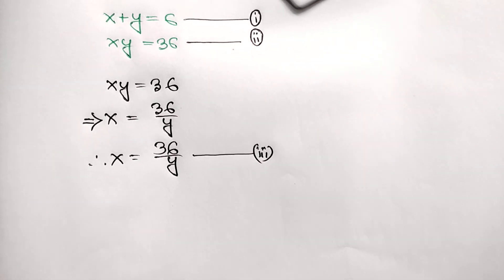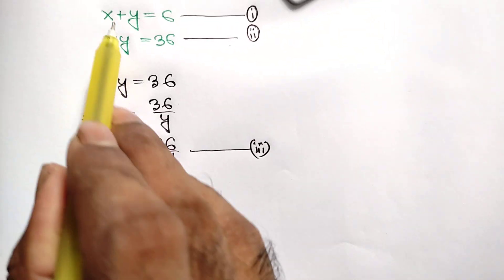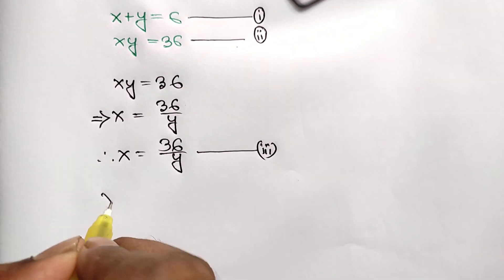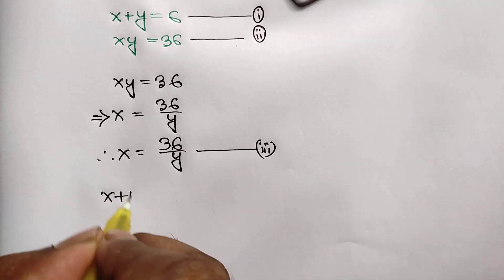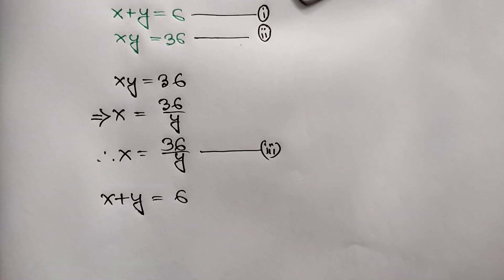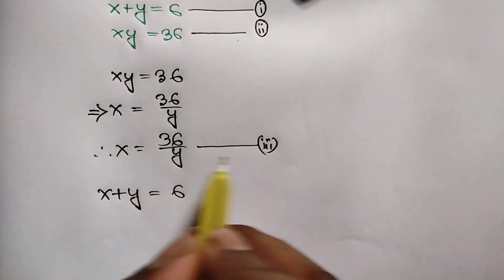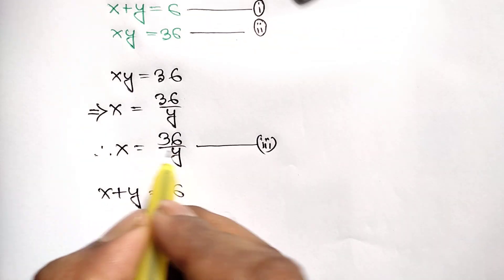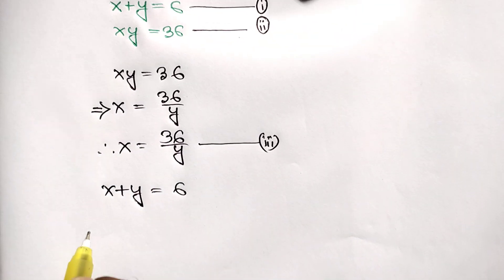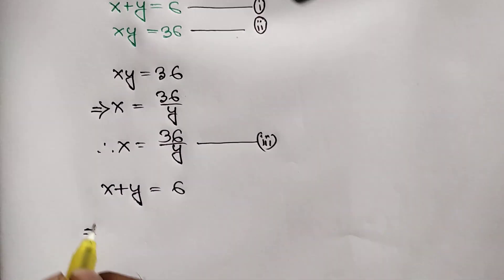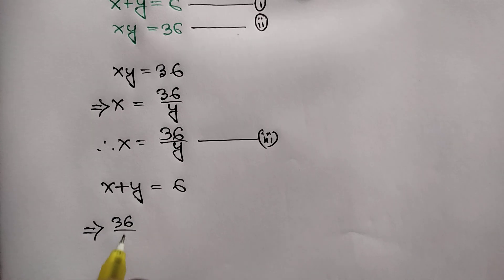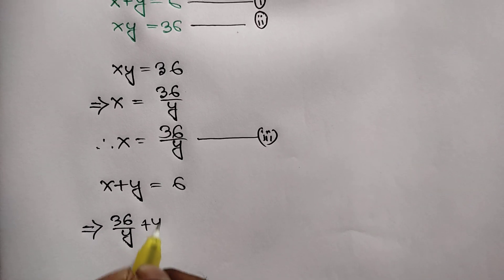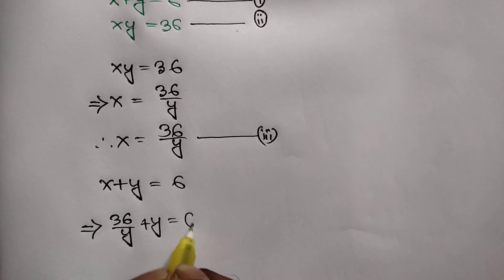Now, from equation number 1, we have x plus y is equal to 6. From equation number 3, x is equal to 36 over y. So we can write 36 over y plus y is equal to 6.